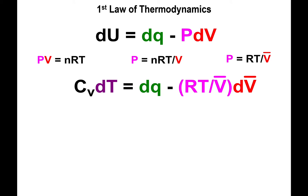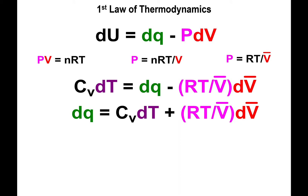What we're going to do now is substitute the term for pressure and also the term for internal energy in terms of the heat capacity at constant volume into the first law of thermodynamics. If you add PdV to both sides, you end up with the change in heat being equal to the heat capacity at constant volume times dT plus RT divided by the molar volume times the change in molar volume.